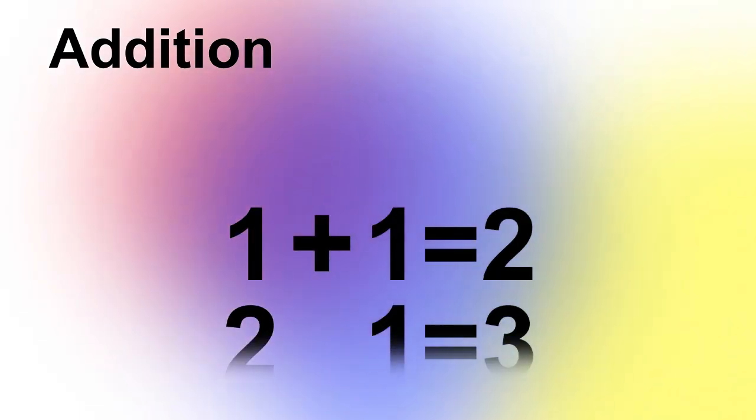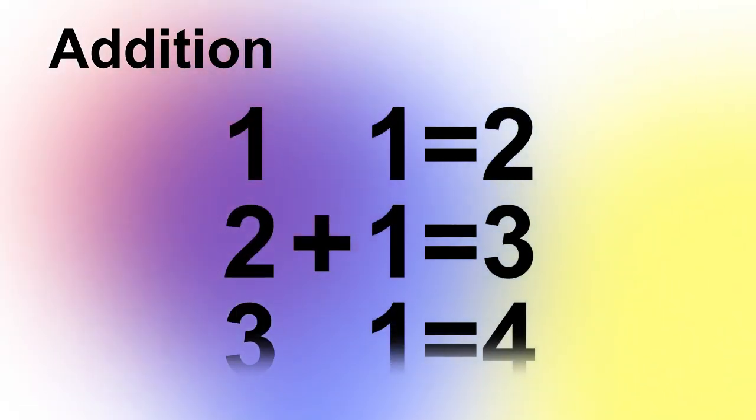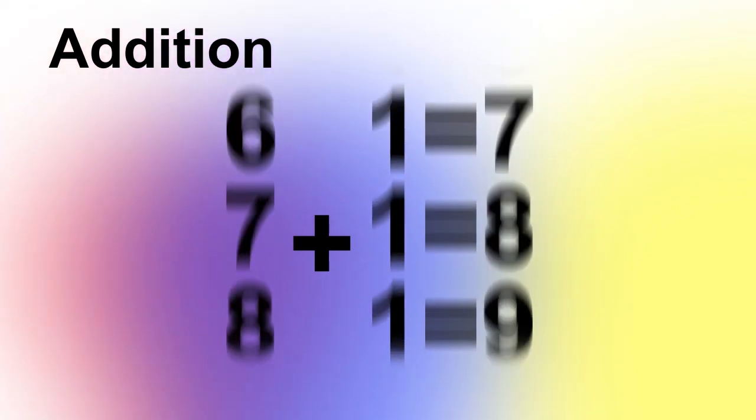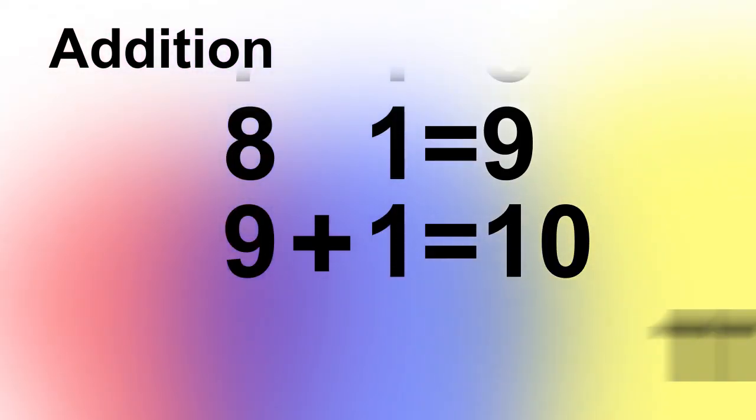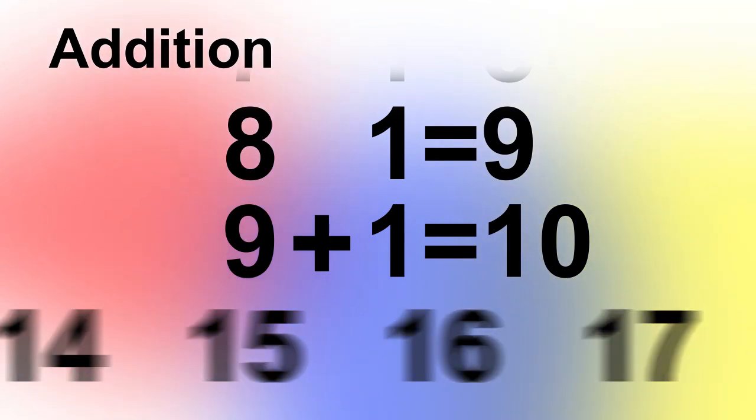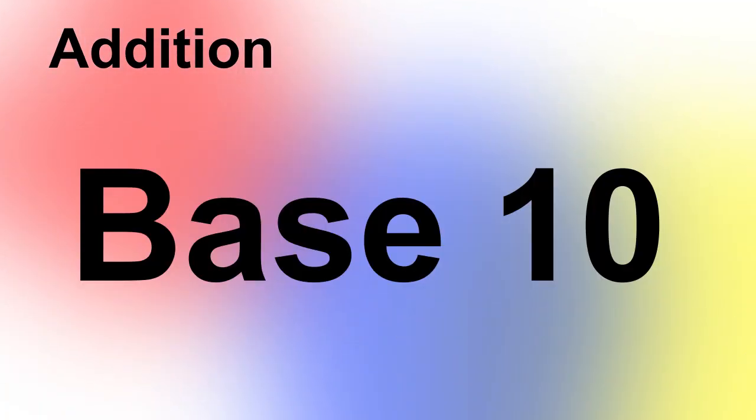1 plus 1 equals 2, 2 plus 1 equals 3, 3 plus 1 equals 4, and so on until we get to 10. In our number system, the numbers start to repeat after 10. We call this base 10. It doesn't have to be this way, but it's another axiom we use to build our system.